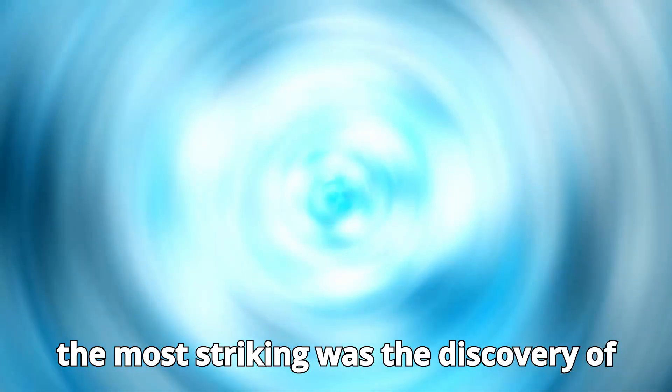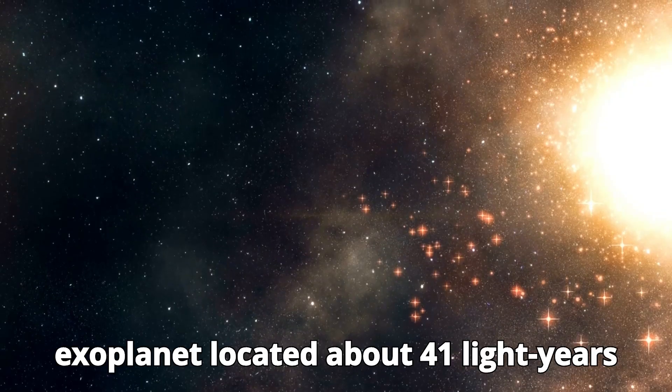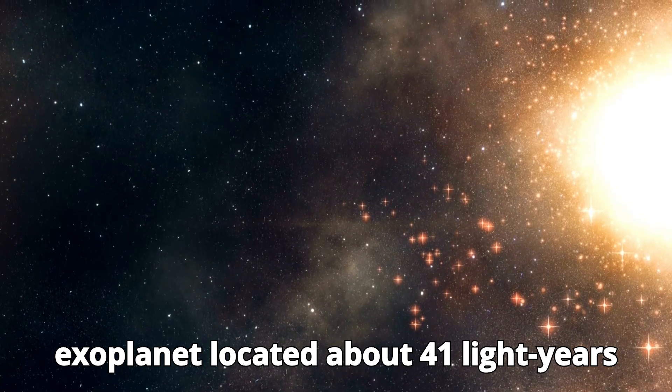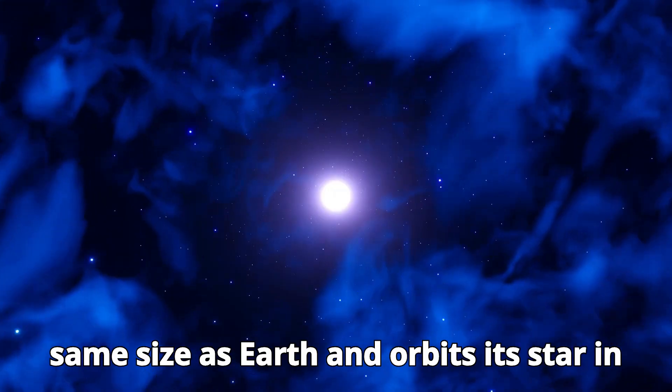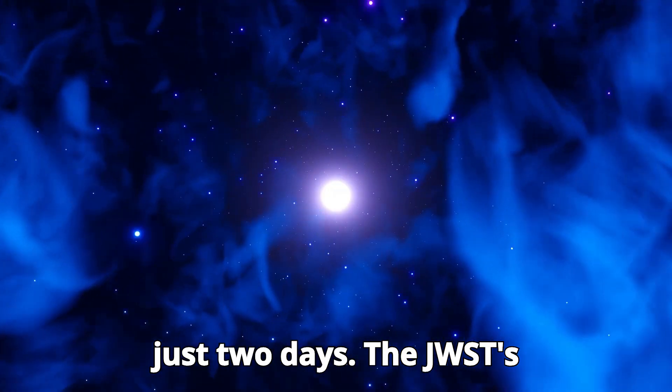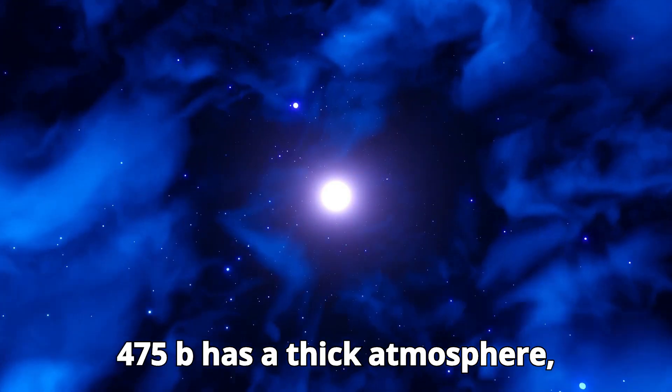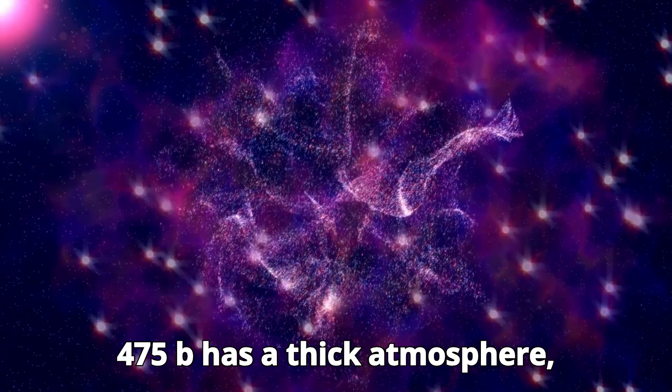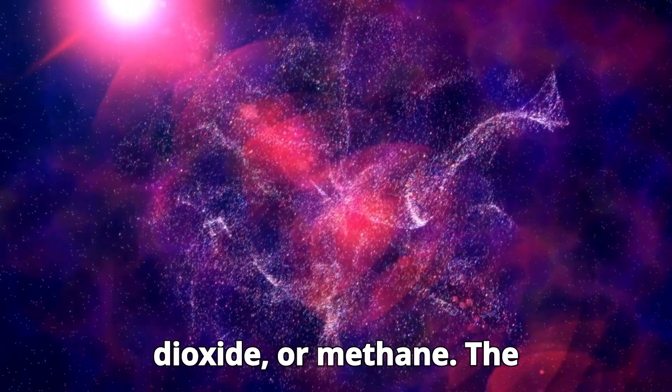One of the most striking was the discovery of LHS-475b, an exoplanet located about 41 light-years from Earth. This planet is roughly the same size as Earth and orbits its star in just two days. The JWST's observations revealed that LHS-475b has a thick atmosphere, possibly made of water vapor, carbon dioxide, or methane.